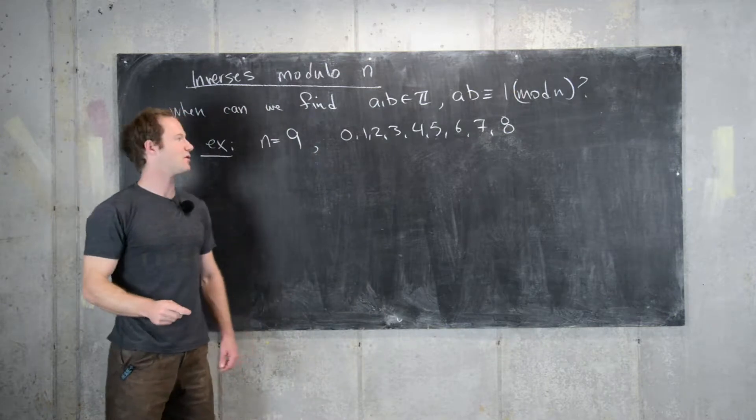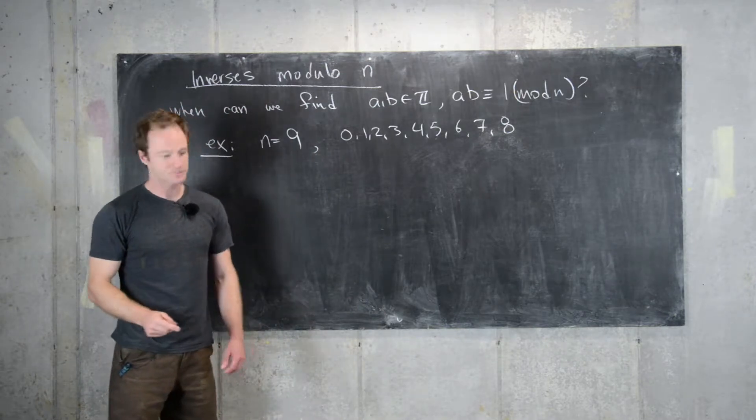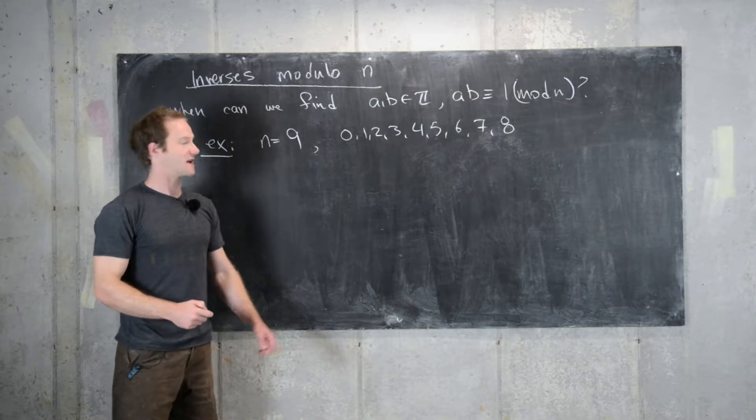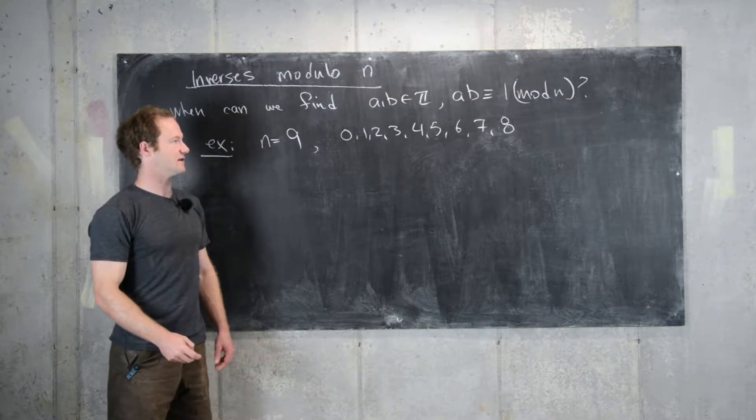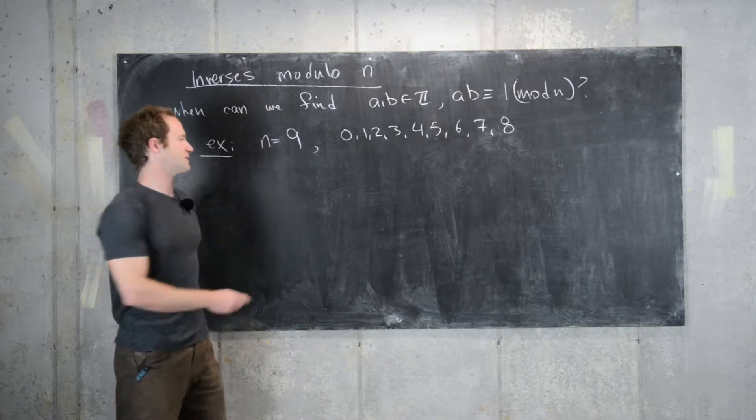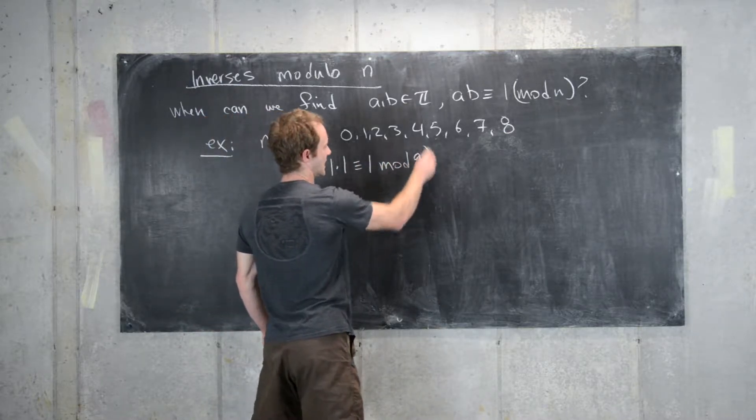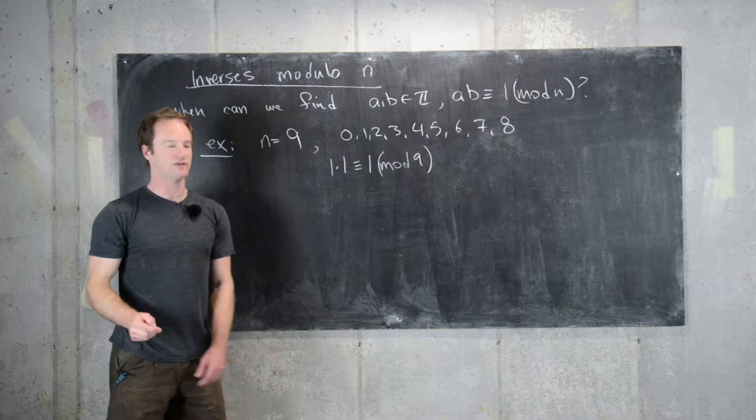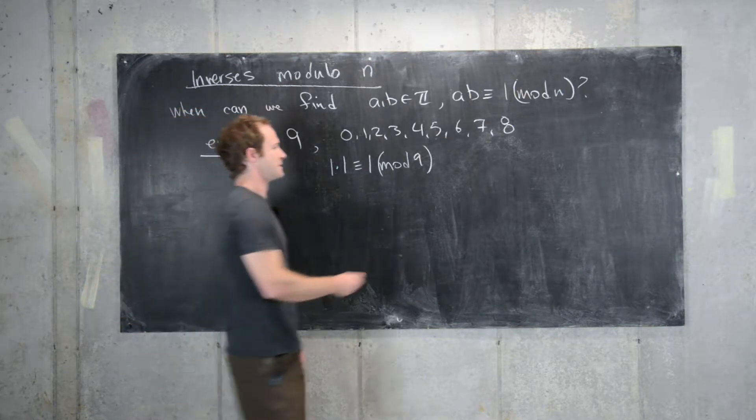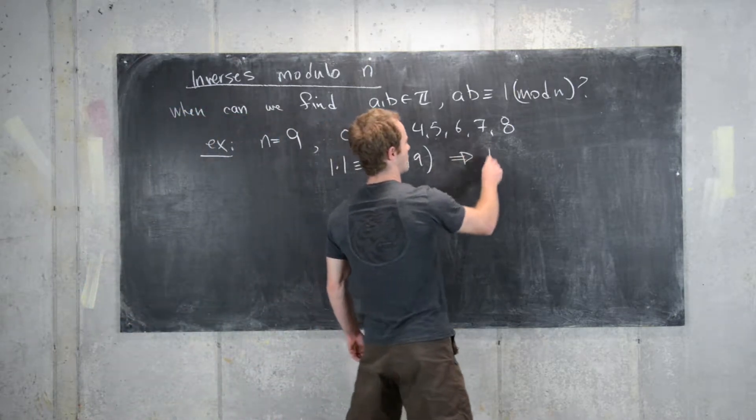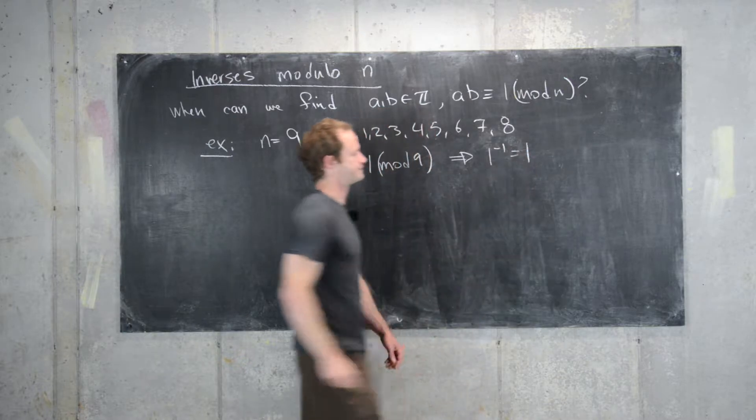Because those are the minimal residues modulo 9. Now notice it's obvious that 1 has an inverse mod 9. And that's because 1 times 1 is congruent to 1 mod 9. So 1 will always have an inverse mod n for any n. And here we could write 1 inverse equals 1.